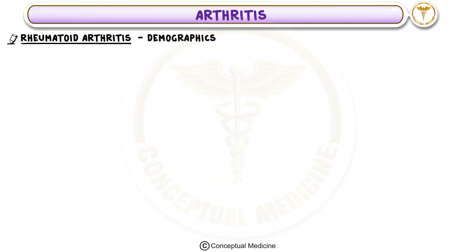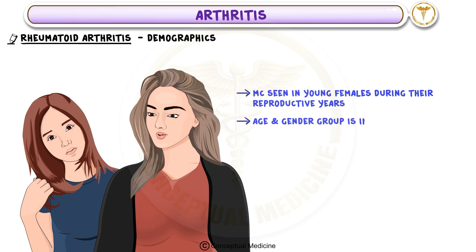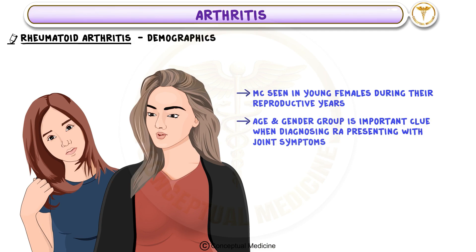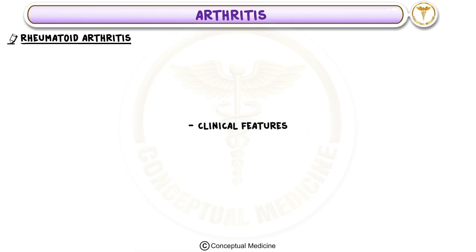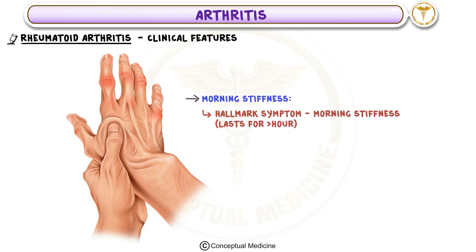Demographics and Clinical Features: Rheumatoid arthritis is most commonly seen in young females, particularly during their reproductive years. A hallmark symptom is morning stiffness lasting more than an hour, which improves as the day progresses — a key characteristic of inflammatory arthritis like rheumatoid arthritis.